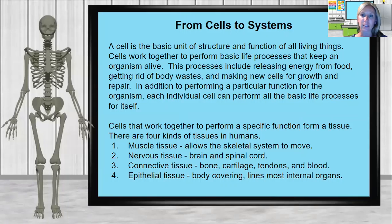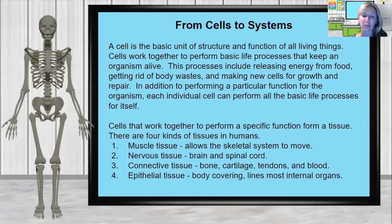A cell is the basic unit of structure and function for all living things. Cells work together to perform basic life processes that keep an organism alive. This includes releasing energy from food, getting rid of body waste, and making new cells for growth and repair. In addition to performing particular functions for the organism, each individual cell can perform all of the basic life processes for itself.